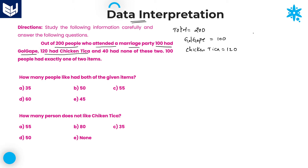From these two values you can come to one conclusion — there is definitely some intersection between Golgap and Chicken Tikka. Because if you add these two: 100 plus 120 equals 220, but the total number of people who attended the marriage is only 200. It crosses 200, so there is definitely an intersection between Golgap and Chicken Tikka.